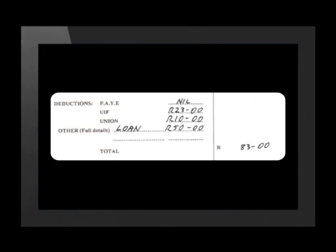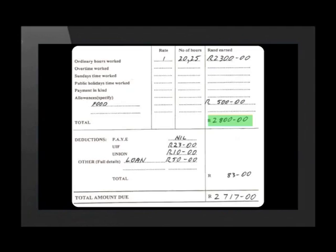This payslip also indicates that the employee is paying off a loan from his salary, with a monthly deduction of 50 rand. Once all the deductions have been listed and totaled, the total amount due can be calculated. 2,800 rand minus 83 rand gives a total of 2,717 rand. This is the amount of money that the employer pays the employee. On the next few payslips we will see there are many other deductions that can be made.